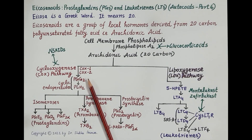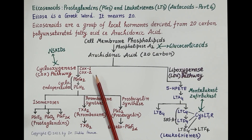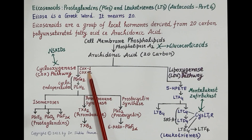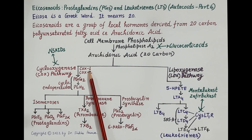The cyclooxygenase enzyme exists in three isoforms: COX-1, COX-2, and COX-3. The exact role of COX-3 in humans is not known. COX-1 is a constitutive enzyme present in most body tissues. In the gastrointestinal tract, COX-1 mediates synthesis of prostaglandins that protect the epithelial lining of the stomach and intestine from the corrosive effects of gastric juice.